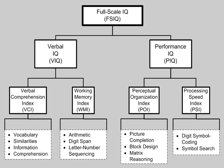The Performance IQ included six tests and also provided two subindexes: perceptual organization and processing speed. The perceptual organization index included: block design, matrix reasoning, and picture completion. The processing speed index included: digit symbol coding and symbol search. Two tests — picture arrangement and object assembly — were not included in the indexes. Object assembly is not included in the PIQ.